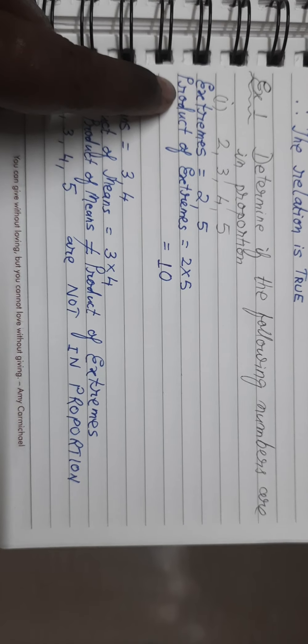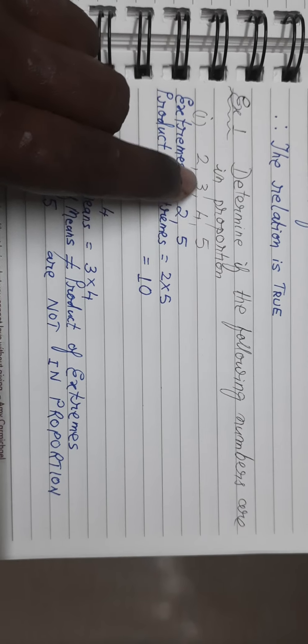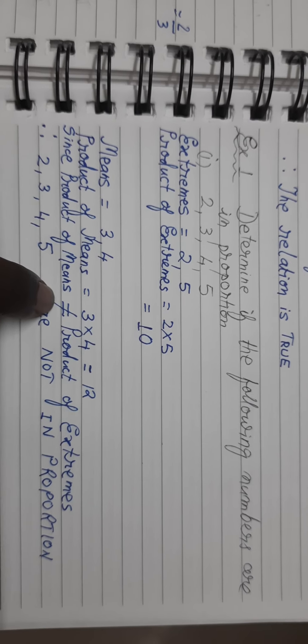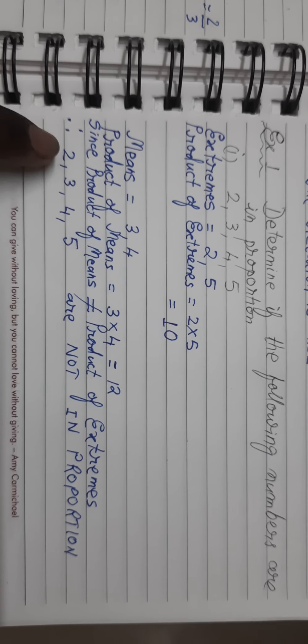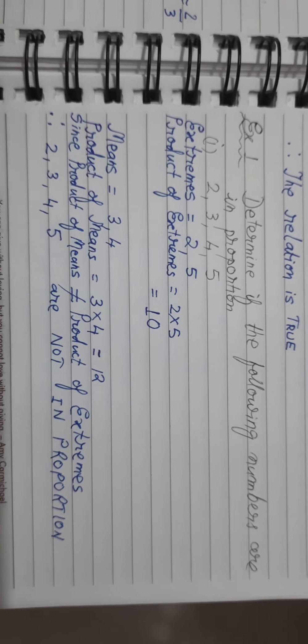Are 2, 3, 4, and 5 in proportion? The corner numbers — the extremes — are 2 and 5. Product of extremes: 2 into 5 gives 10. The middle numbers — the means — are 3 and 4. Product of means is 3 into 4, which is 12. Product of extremes is 10 and product of means is 12 — they are not equal. Since product of means is not equal to product of extremes, therefore 2, 3, 4, and 5 are not in proportion.